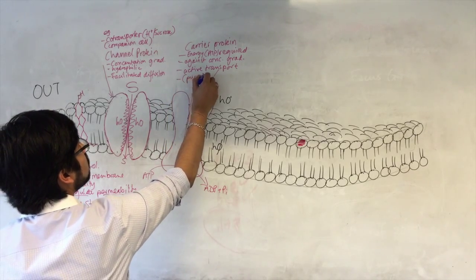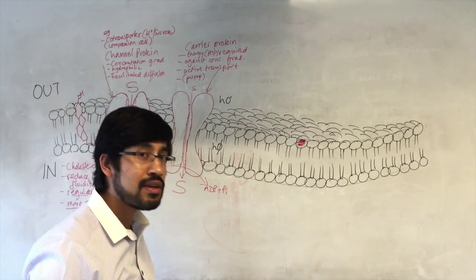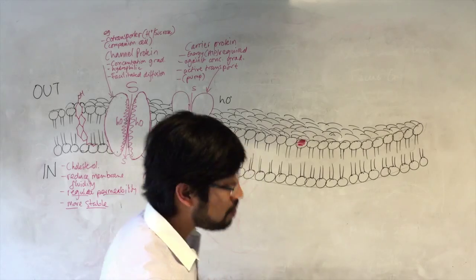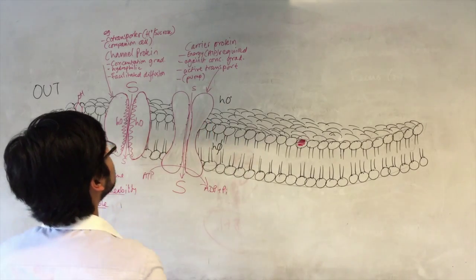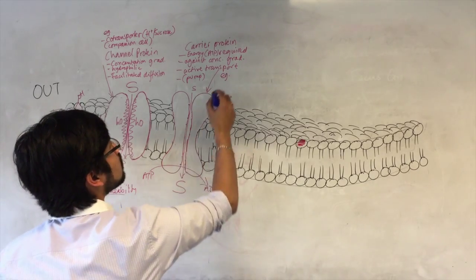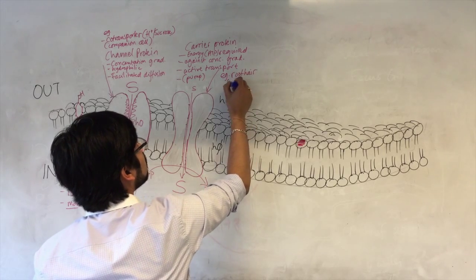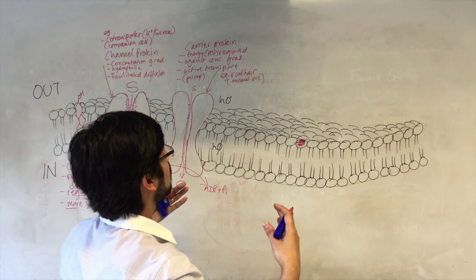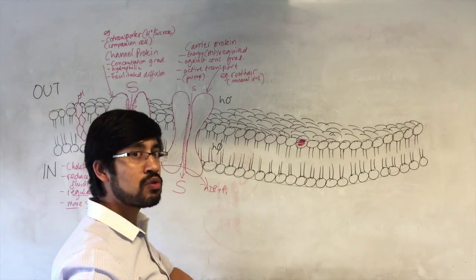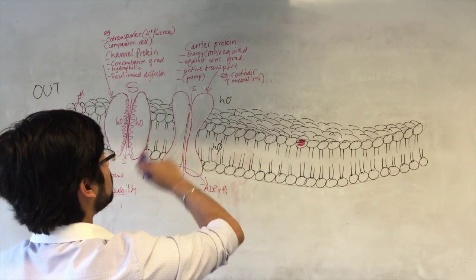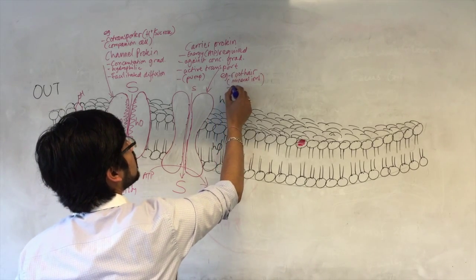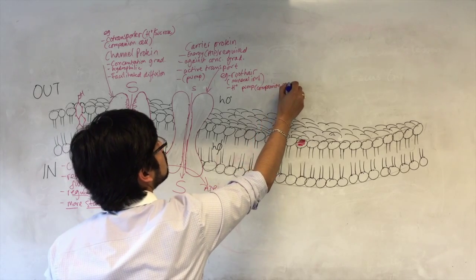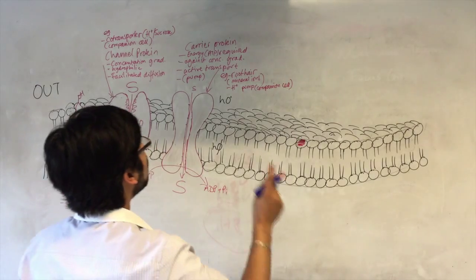Some examples where we've looked at this or some examples that we've already come across in other parts of the course include, in the root hair, the movement of mineral ions. When the ions are actively moved from outside the root hair cell into the root hair cell, with the use of ATP, that was active transport. It would have required a protein like this. Other examples include the H-plus pump in the companion cell, companion cell or phloem in translocation of sucrose.